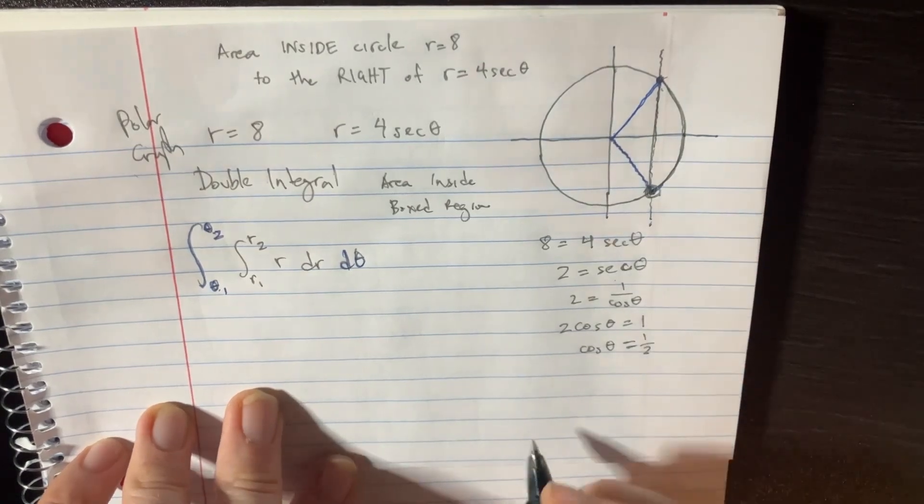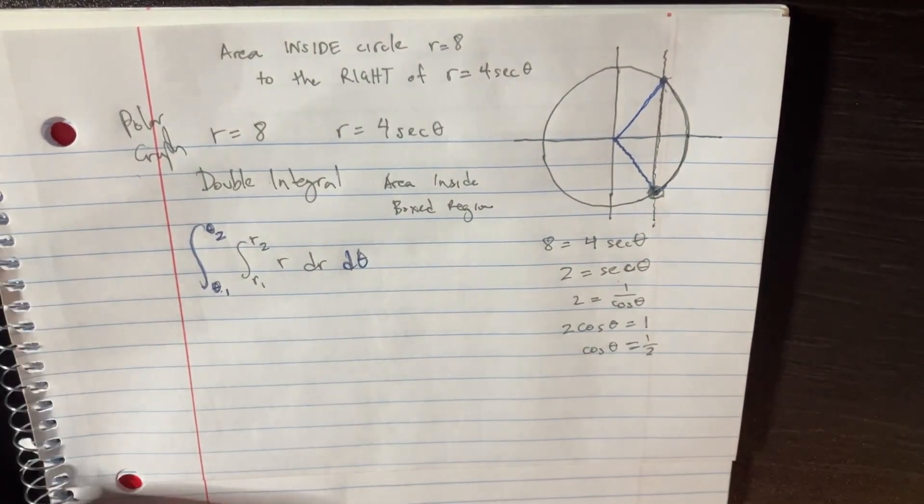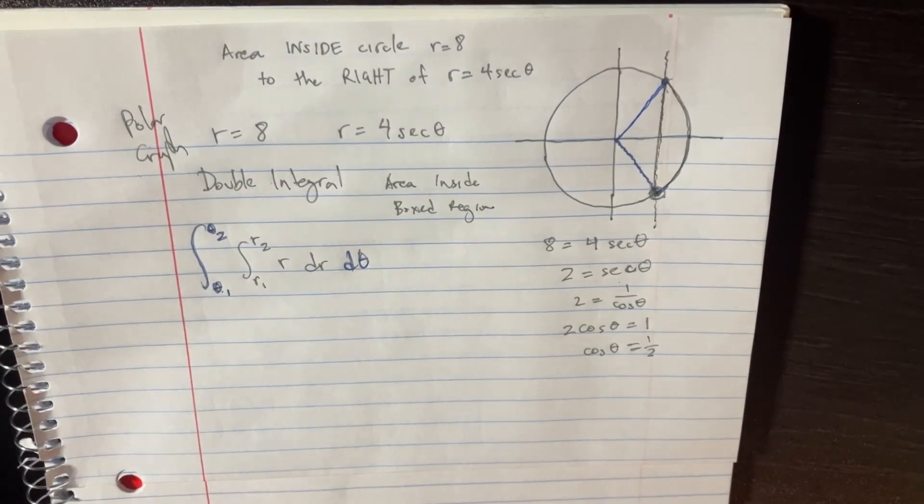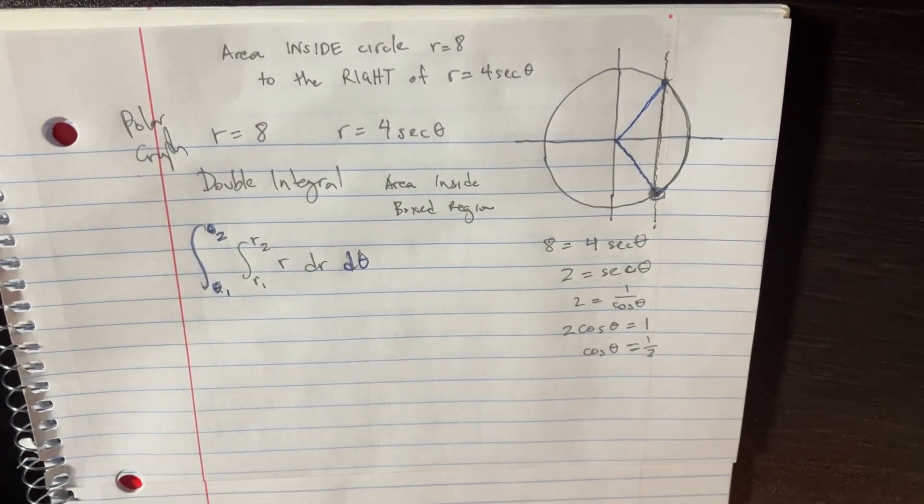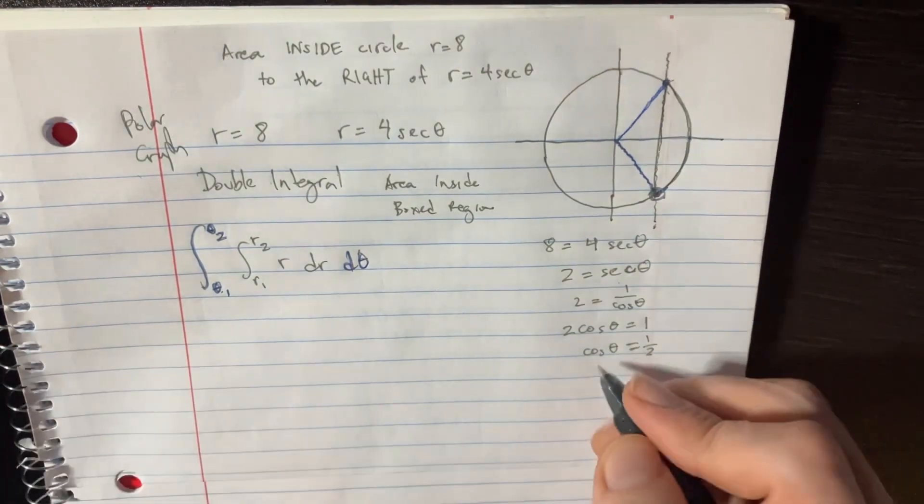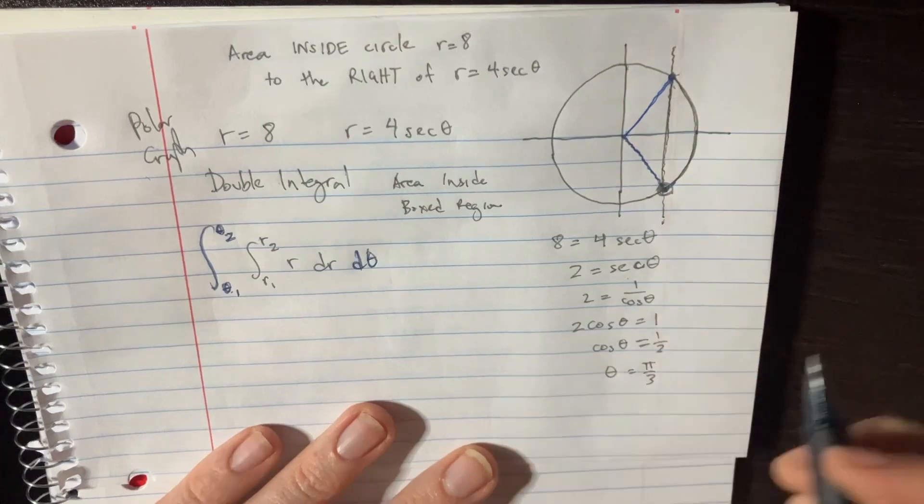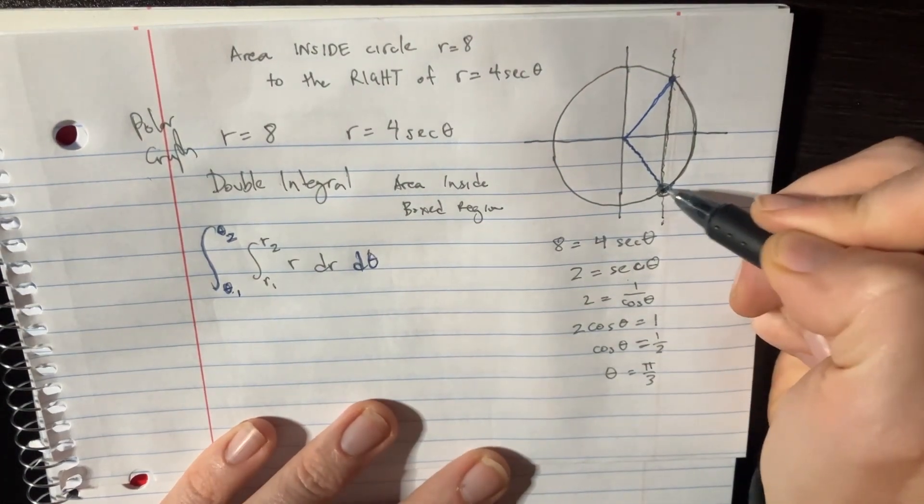That means that cosine theta is equal to a half. And if we plug that into the calculator, the inverse cosine of a half, it's just pi over 3. So theta is equal to pi over 3, and that's going to be negative pi over 3 over here.